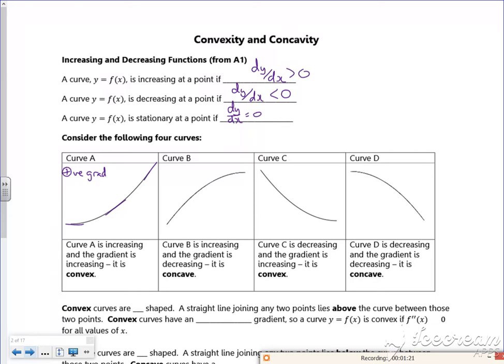So it says here that curve A is increasing and the gradient is increasing, so it's got a positive gradient and the value of the gradient is getting bigger, then it's convex.